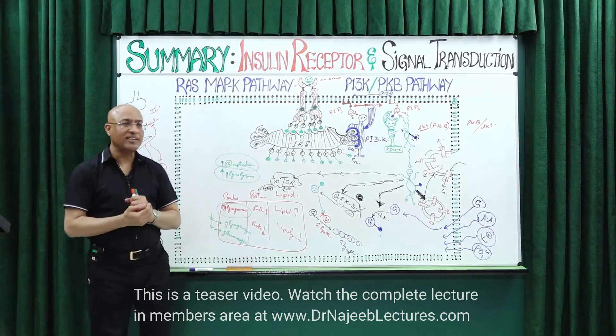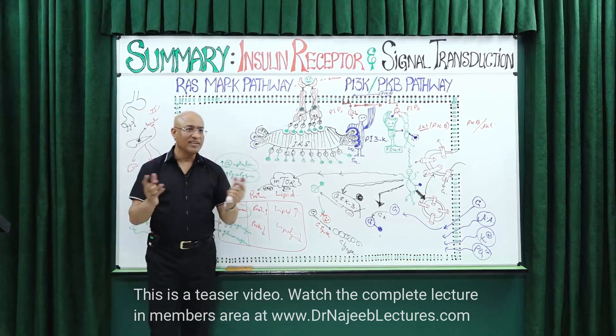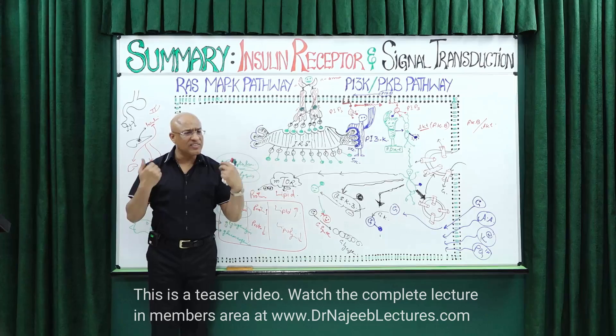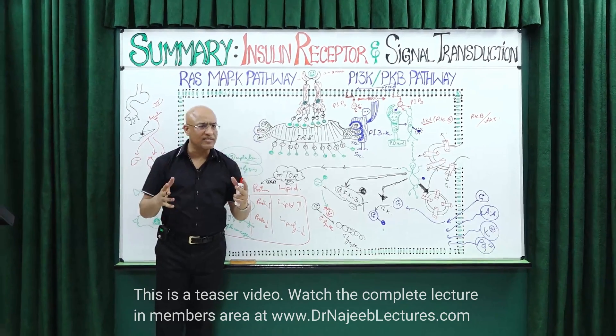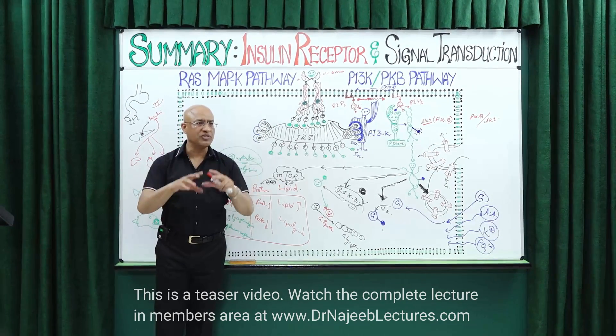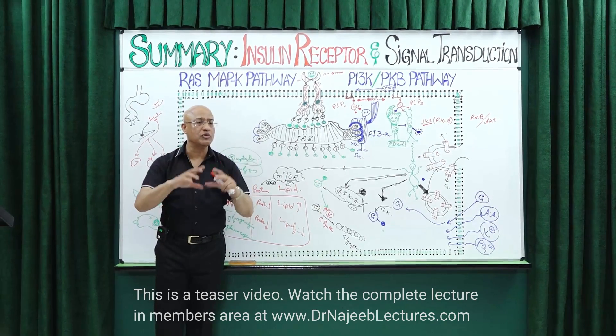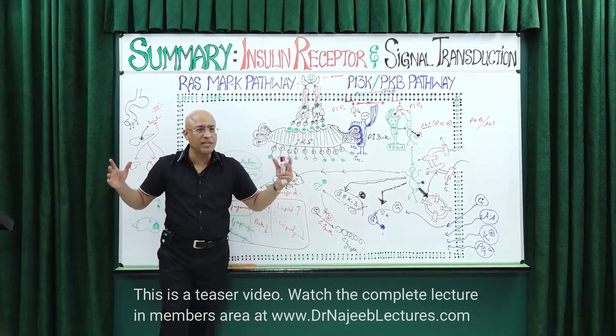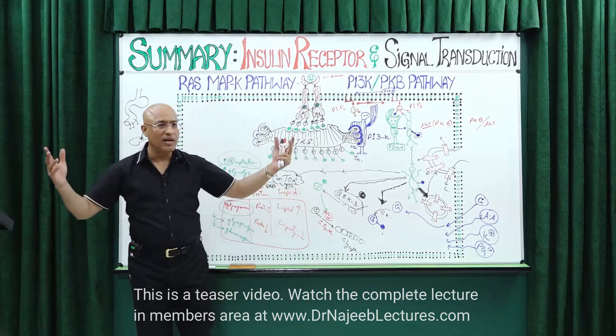When cells are damaged and when cells are useless, they commit suicide — they undergo the process of apoptosis. But when cells are happy, they want to live long.